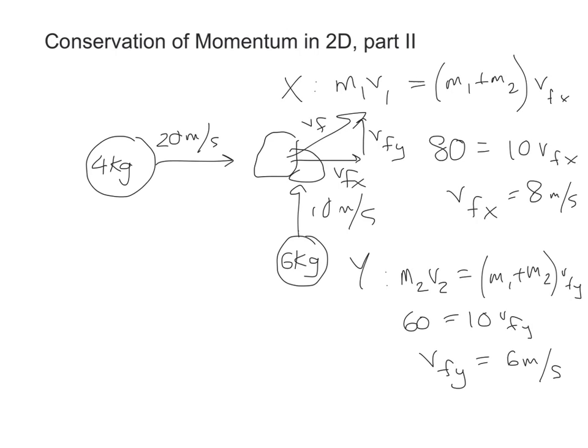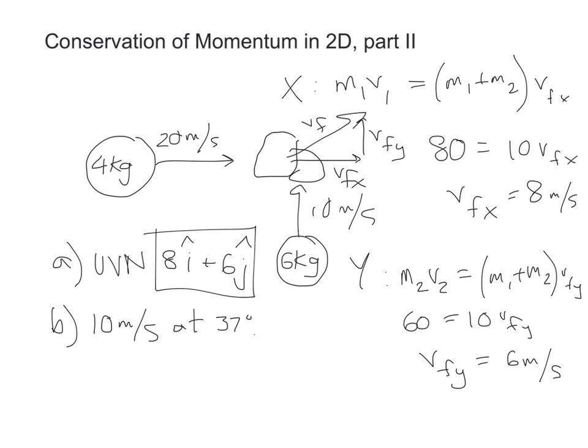Now, other things they could ask. If I say unit vector notation, you're done, you just put i and j after everything, so 8i plus 6j would be the velocity in unit vector notation. If they ask for it as a speed and direction, then you're using Pythagorean theorem. 8 squared plus 6 squared equals the speed squared, turns out that's 10 because I picked amazing numbers. So after the collision, the two combined objects move along at 10 meters per second, and I should be able to use inverse tangent to arrive at an angle of 37 degrees.